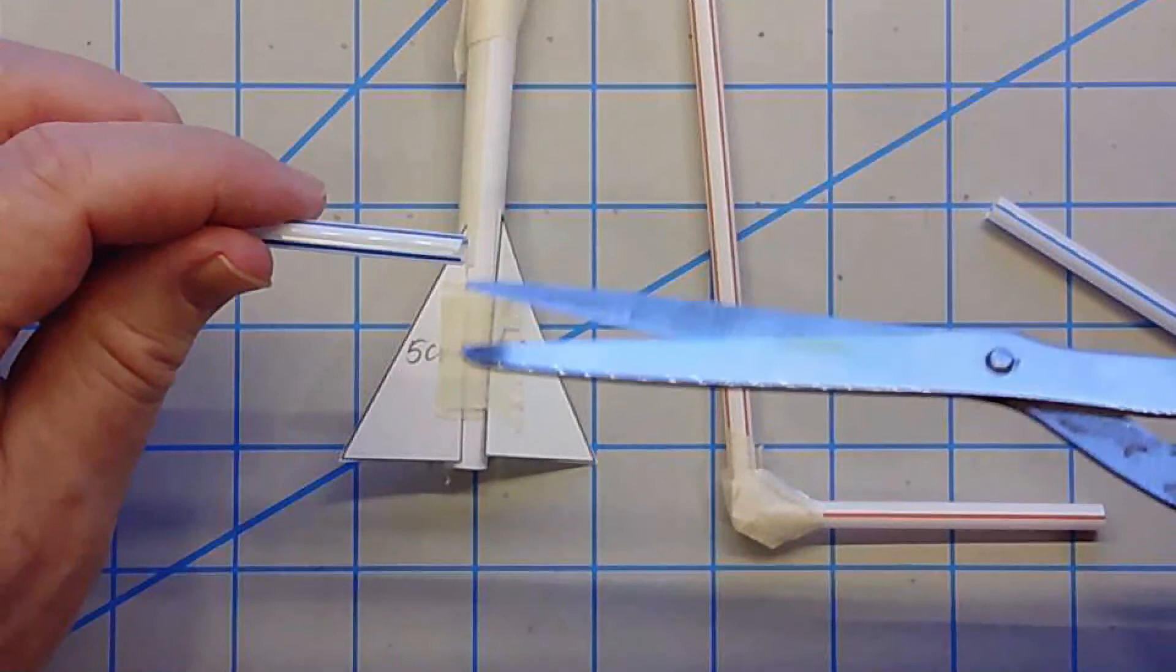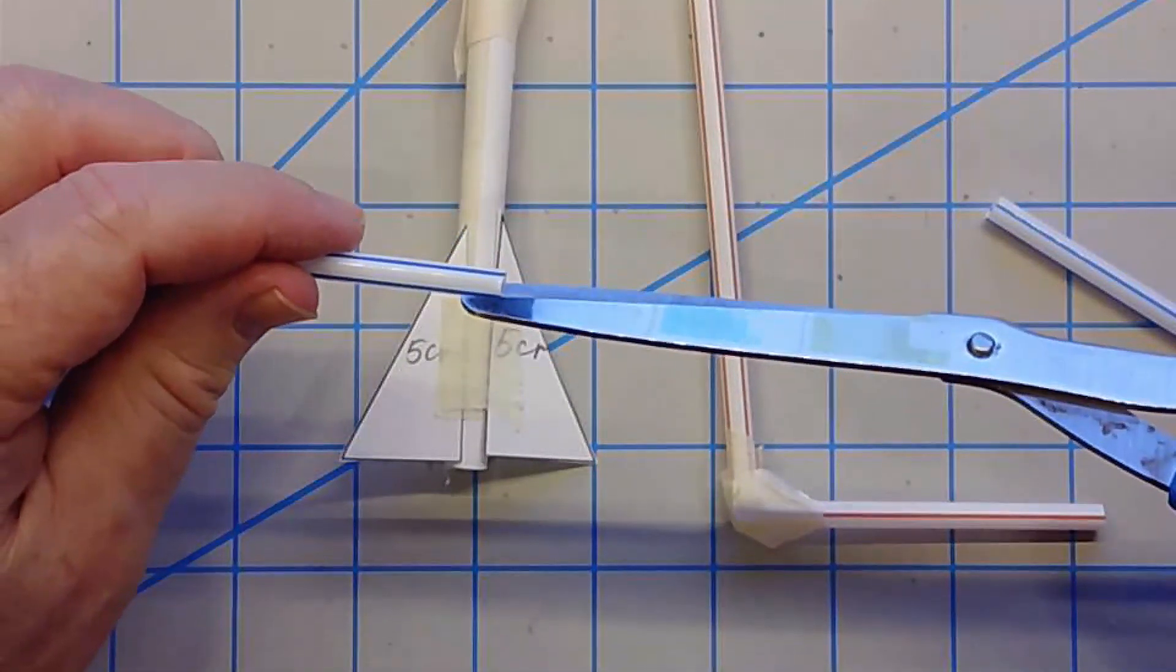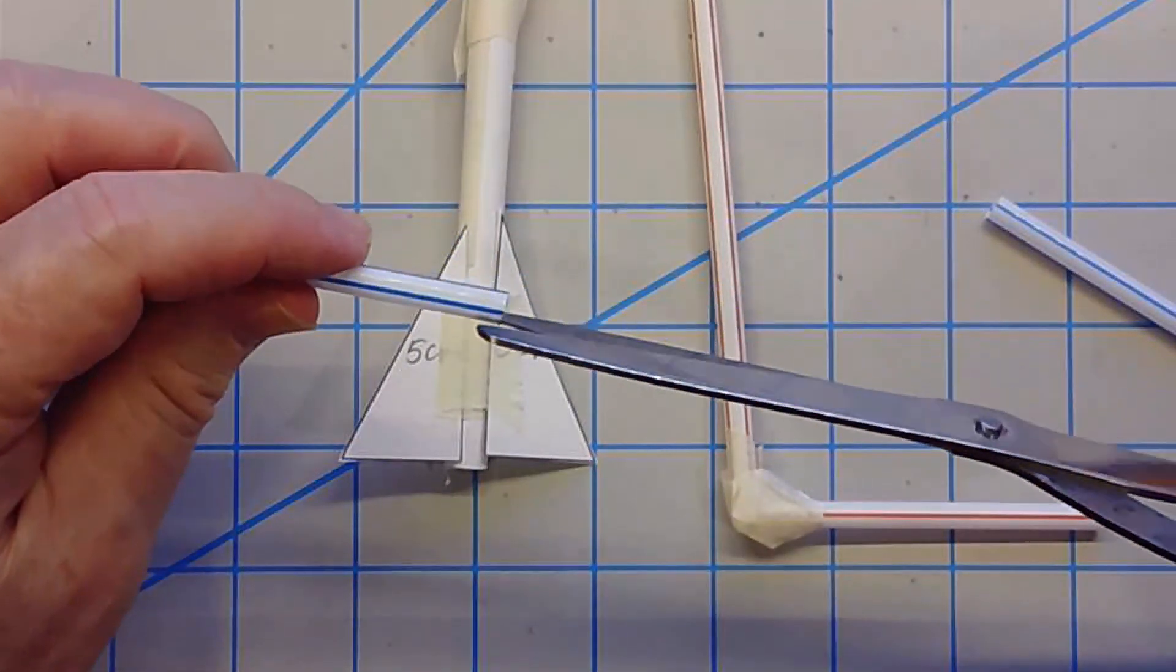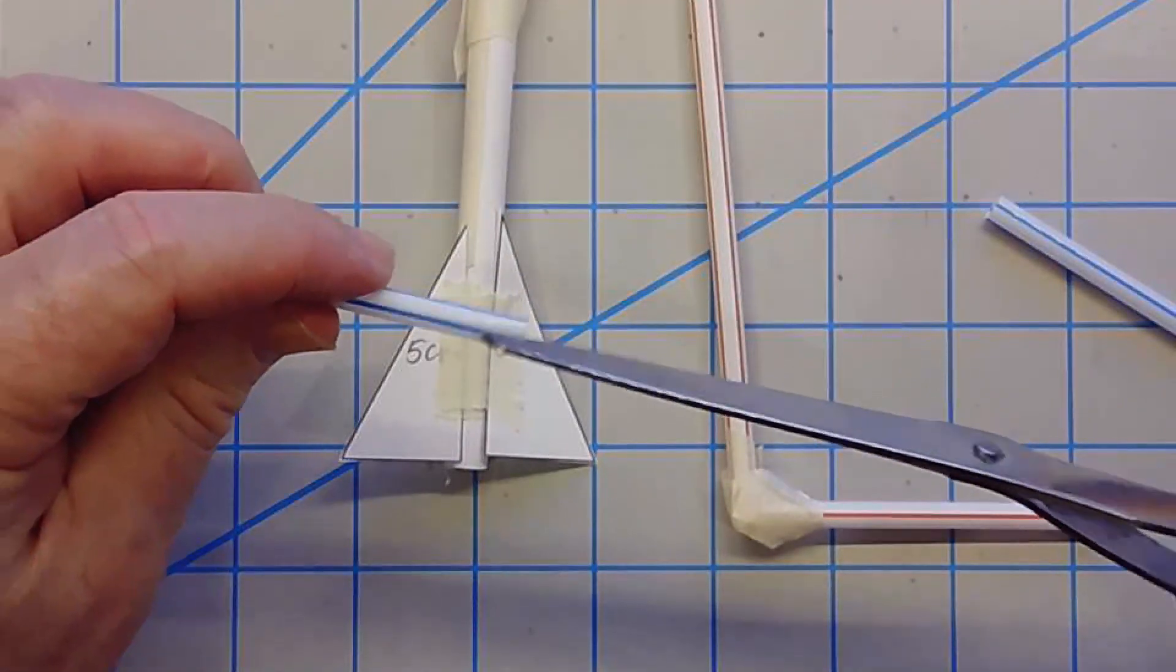So now what I want to do is cut a little piece out of this little flap. So we go right here and right here.